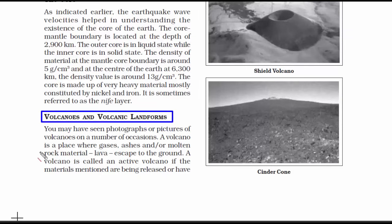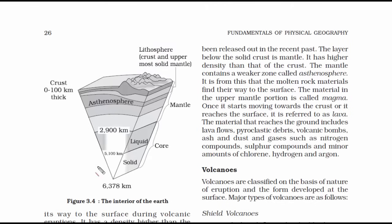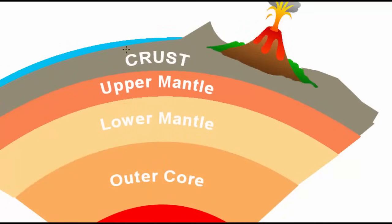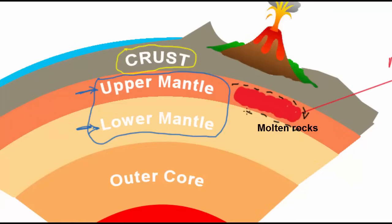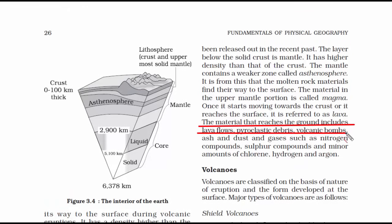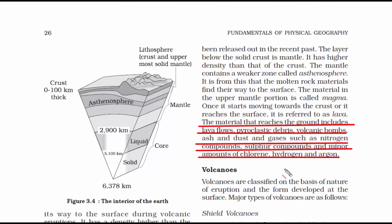Now, volcanoes and volcanic landforms. Below the volcano is the crust — the upper layer of the earth — followed by the mantle, which is divided into upper and lower mantle. The upper mantle is also called the asthenosphere, where 'astheno' means weak. Here the rocks are in molten fluid called magma, which moves around making the crust unstable and causing seismic activities. It is from the asthenosphere that molten rock comes out of the volcano as lava. The material reaching the ground includes lava flows, pyroclastic debris, volcanic bombs, ash and dust, and gases such as nitrogen compounds, sulfur compounds, and minor amounts of chlorine, hydrogen, and argon.